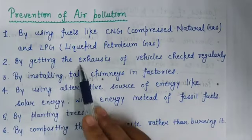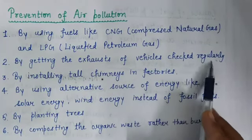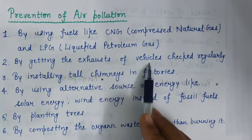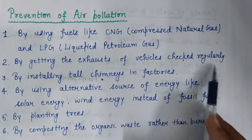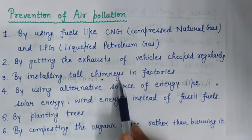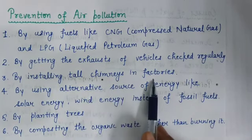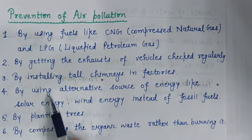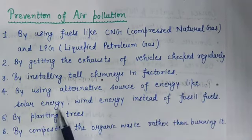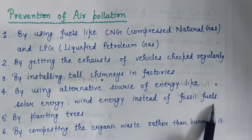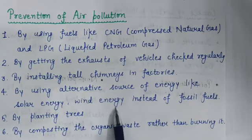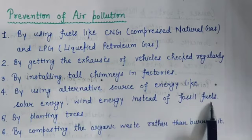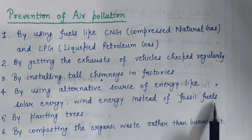Second is by getting the exhaust of vehicles checked regularly — we should check the exhaust smoke level of vehicles regularly. Third is by installing tall chimneys in factories. Next is by using alternative sources of energy like solar energy and wind energy instead of fossil fuels, because solar energy and wind energy do not produce any harmful gases.